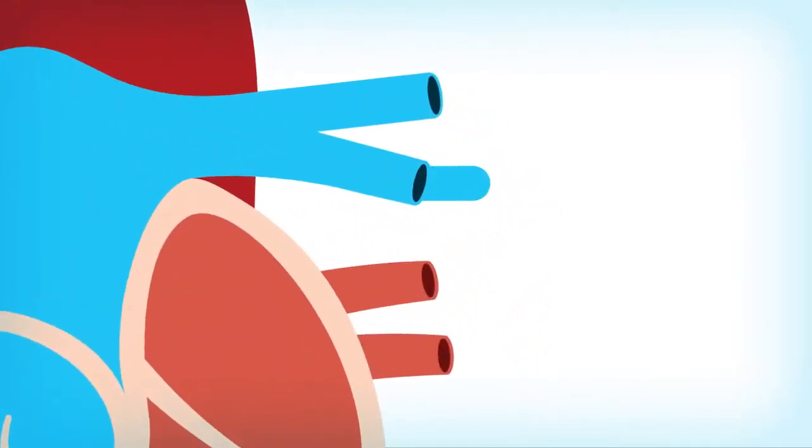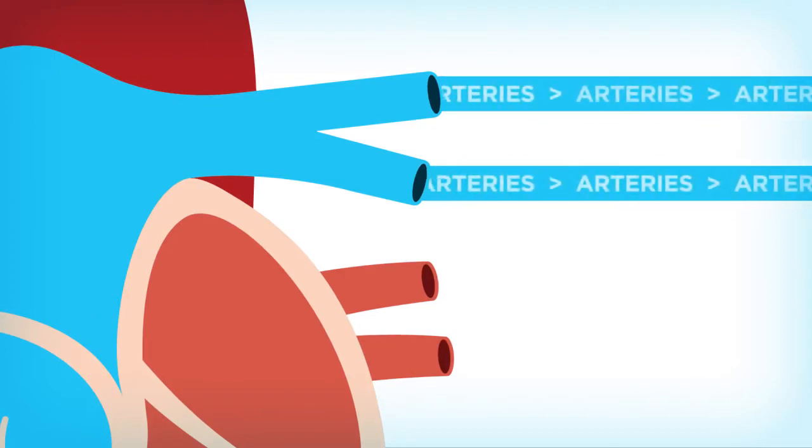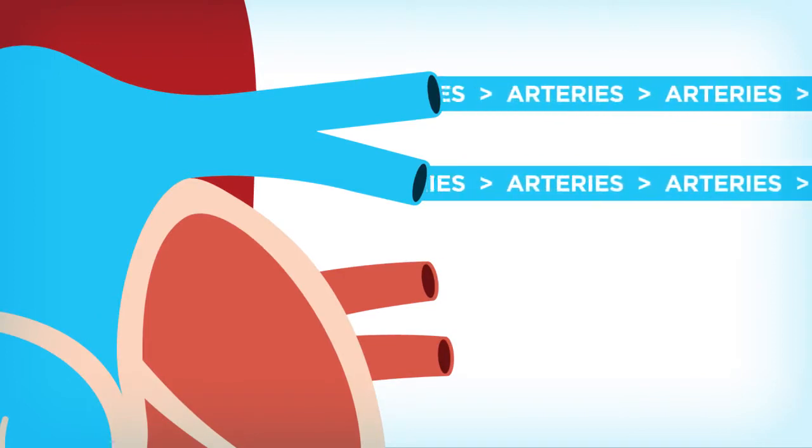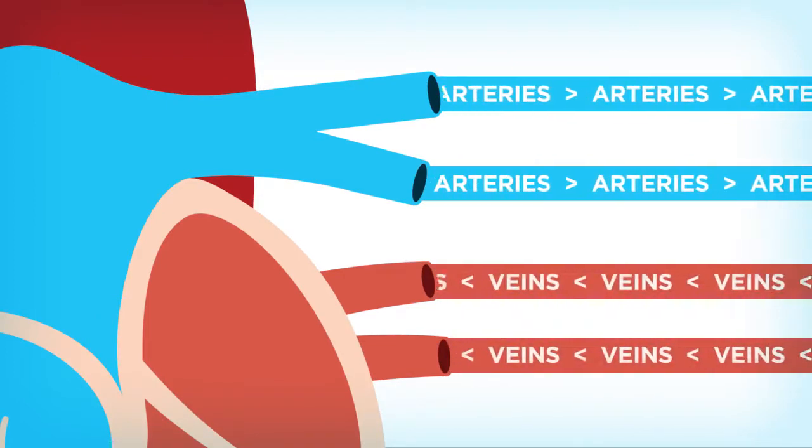Your ventricles and atria include arteries, which carry blood away from the heart, and veins, which carry blood to the heart.